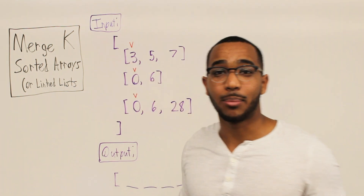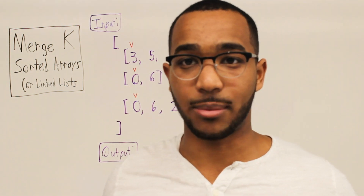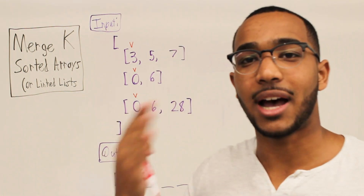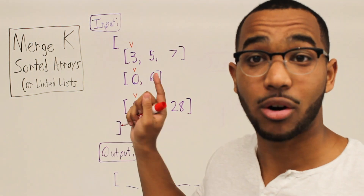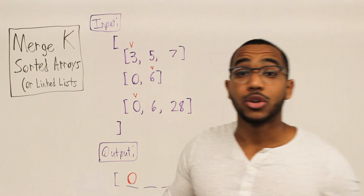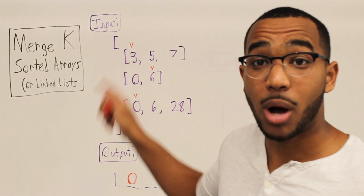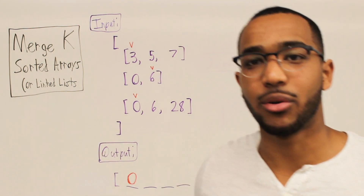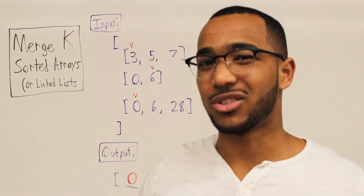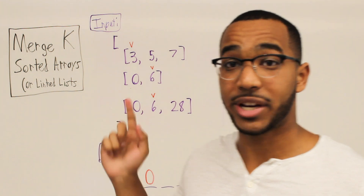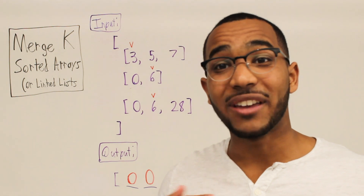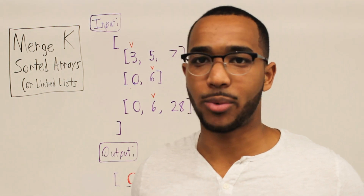We placed a pointer on all of the smallest elements in each array — nothing different from sorting two arrays. Now, what do we do? We take the smallest item between all three of these arrays, which is zero. Again, we're comparing the smallest items that have not been processed in every array. We then have pointers at: three in array one, six in array two, six in array three. When we pull an item from an array because it's our smallest item, we advance to the next item in that array — nothing different from what we already knew.